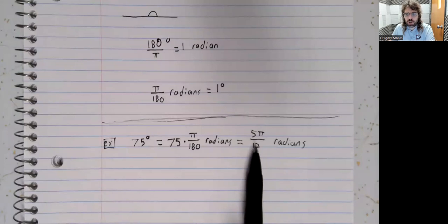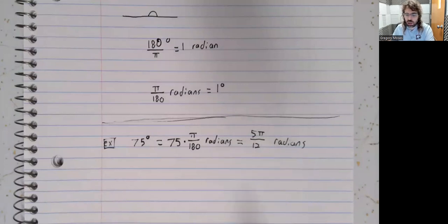It's very normal when you're working with radians to leave your answer like this, instead of plugging it into your calculator and getting a decimal approximation.